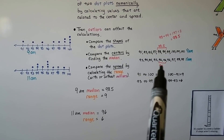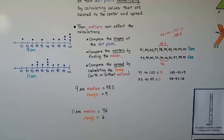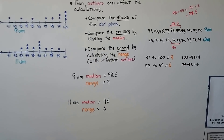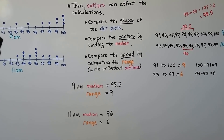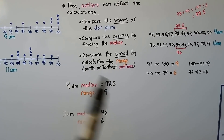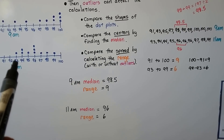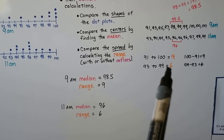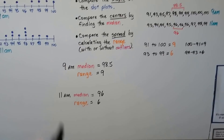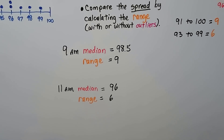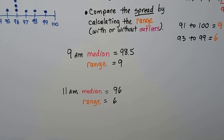For the 11 a.m. class, the median is 96 — there are two 96s in the middle, so it's just 96. We compare the spread by calculating the range with or without outliers. The range for 9 a.m. is 91 to 100: 100 minus 91 equals 9, so the range is 9. For the 11 a.m. class it's 93 to 99: 99 minus 93 equals 6, so the range is 6. Our 9 a.m. median is 98.5 with a range of 9; the 11 a.m. median is 96 with a range of 6.